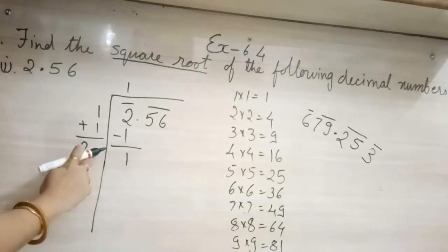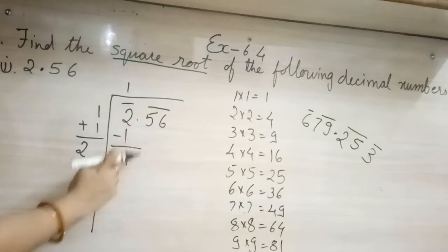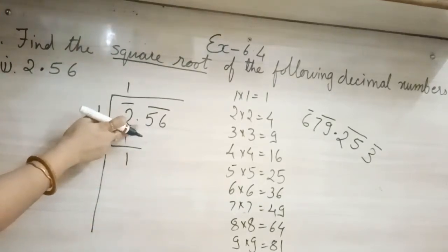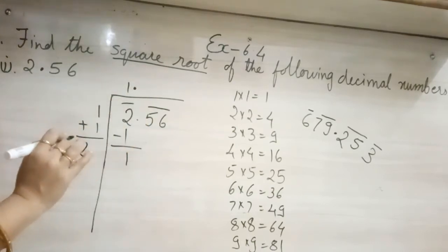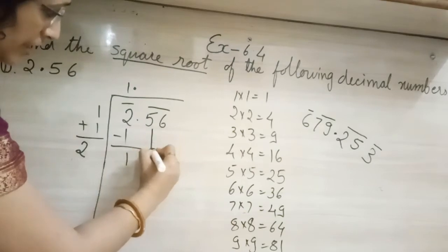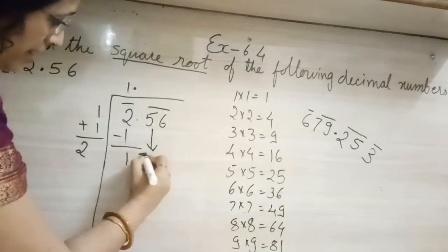So we can write some number here. Then what are we going to do? After 1.56, what is coming? Decimal point. So decimal will be shifted, just like in normal division, in the same way. Now what will come? 1.56.